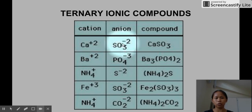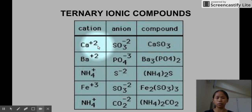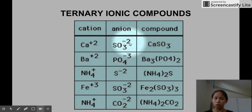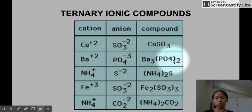Nothing changes if you have calcium 2+ and sulfite — it's the same crisscross method. Since the oxidation number values are equal, you cancel them out, giving a ratio of one to one: one calcium for every sulfite. Calcium loses two and sulfite needs to gain two, so the resulting chemical formula is CaSO₃. For barium 2+ and phosphate PO₄³⁻, when you crisscross it the ratio is 3 to 2, giving Ba₃(PO₄)₂.